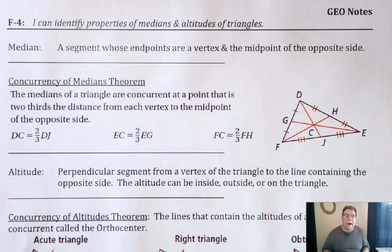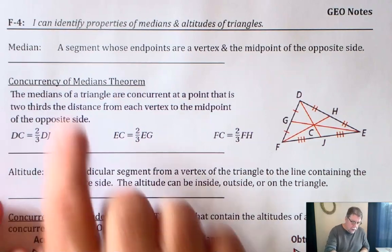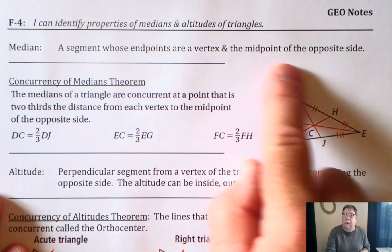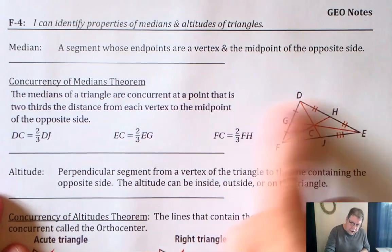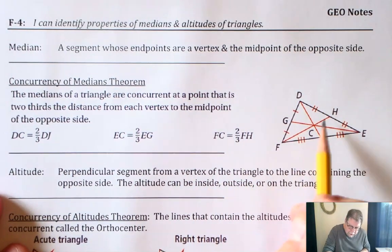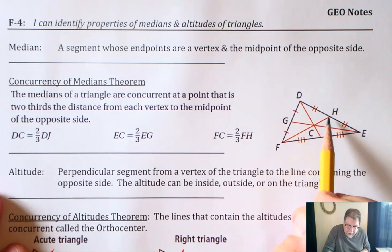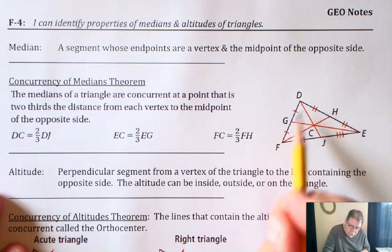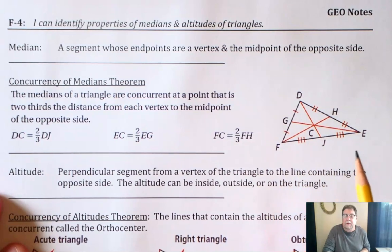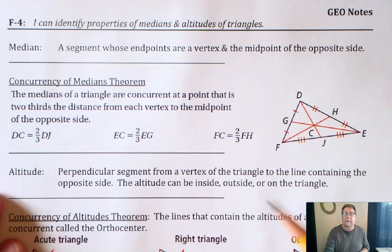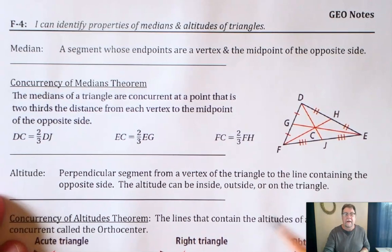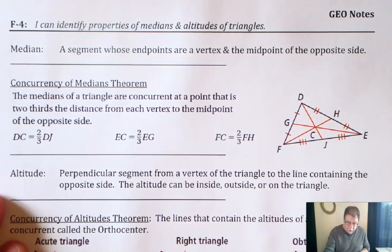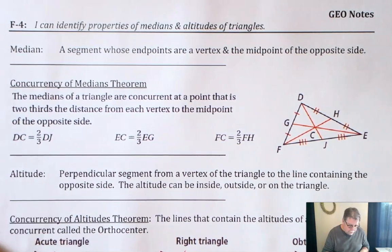Now we're going to look at one called a median line. A median is a segment whose endpoints are a vertex and the midpoint of the opposite side. In this picture you can see the segment goes from an endpoint to the midpoint of the opposite side, indicated by the congruent marks. We have all three of those here, and point C is the point of concurrency of the median lines, called a centroid.